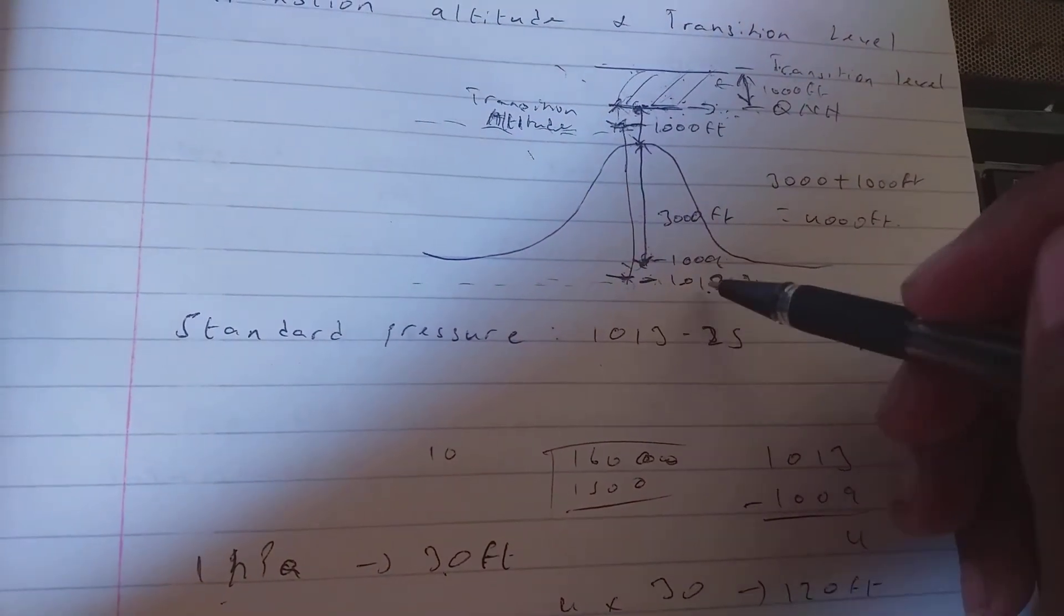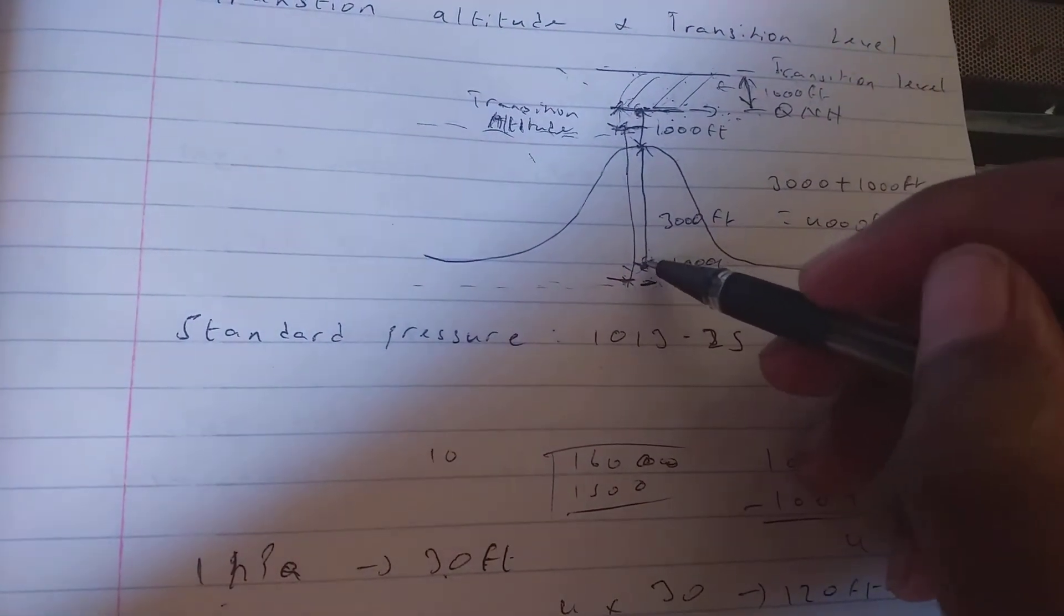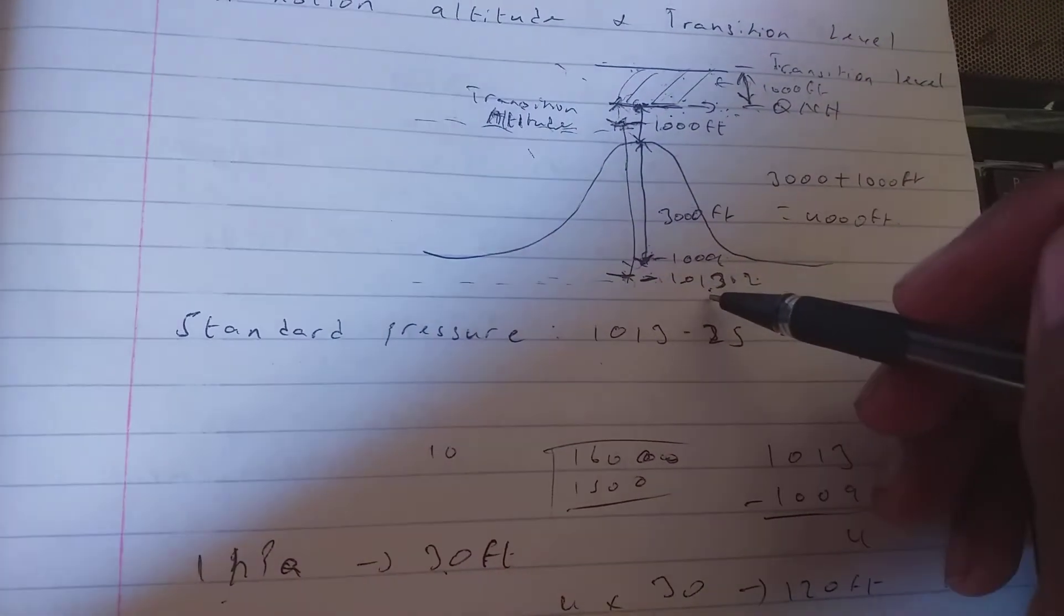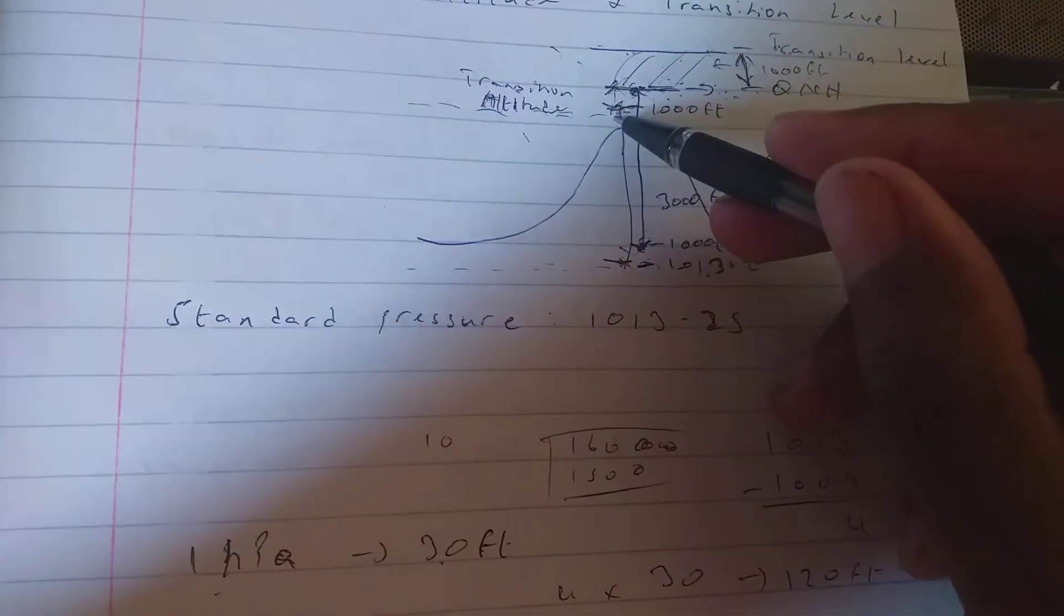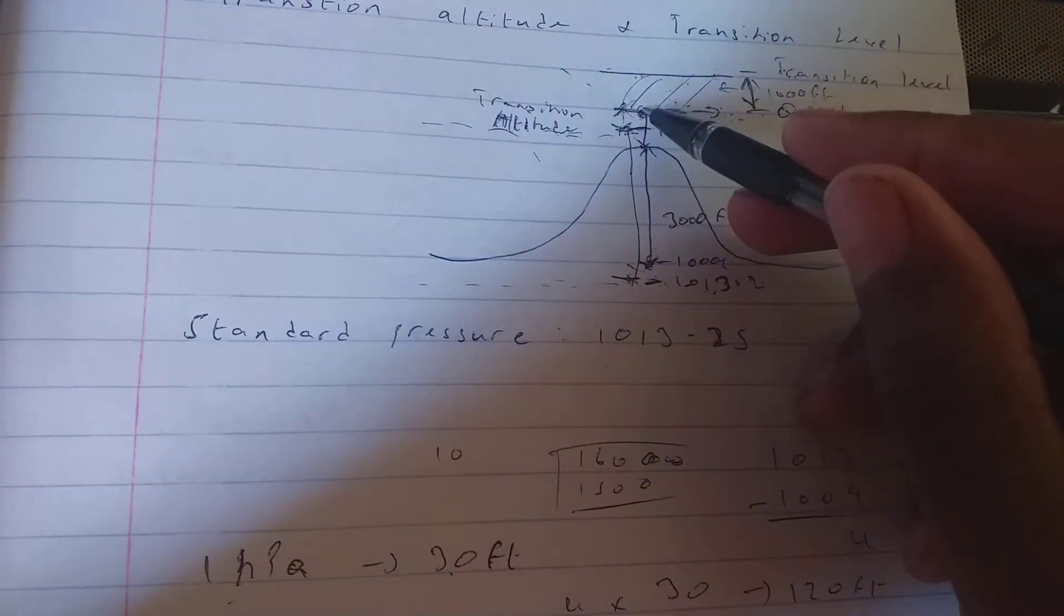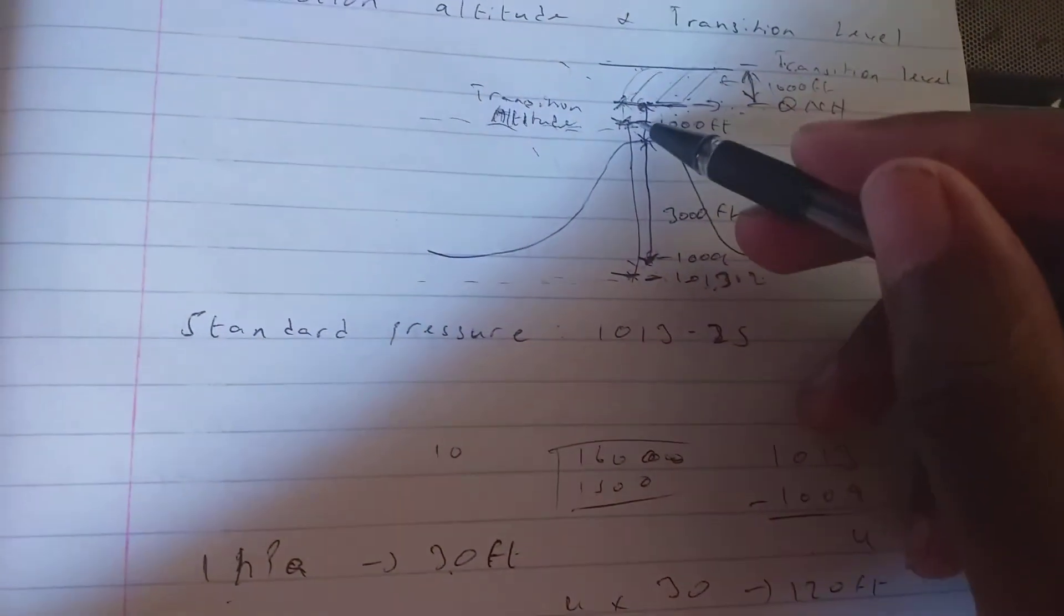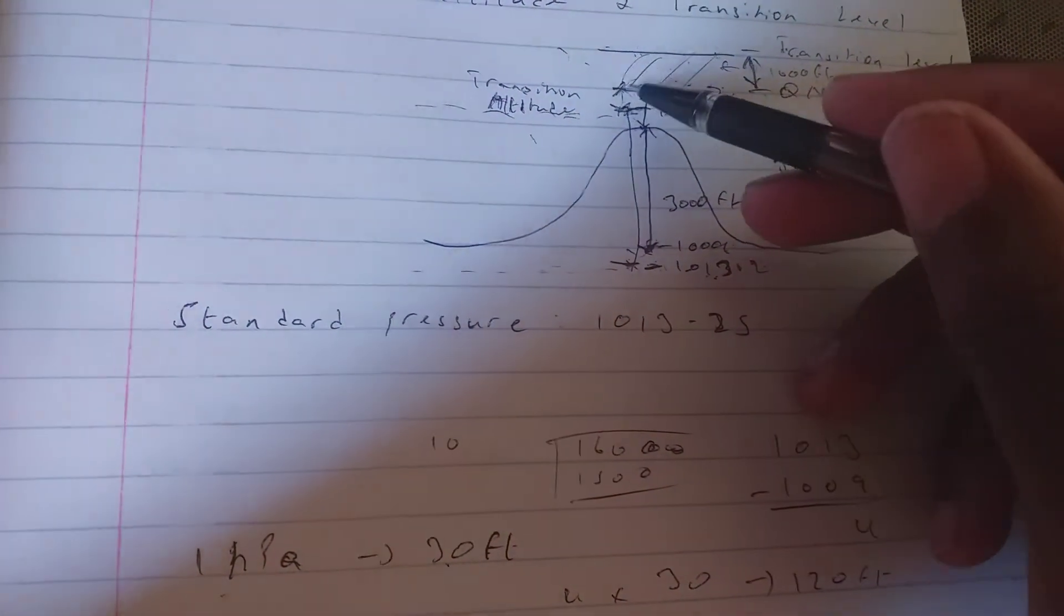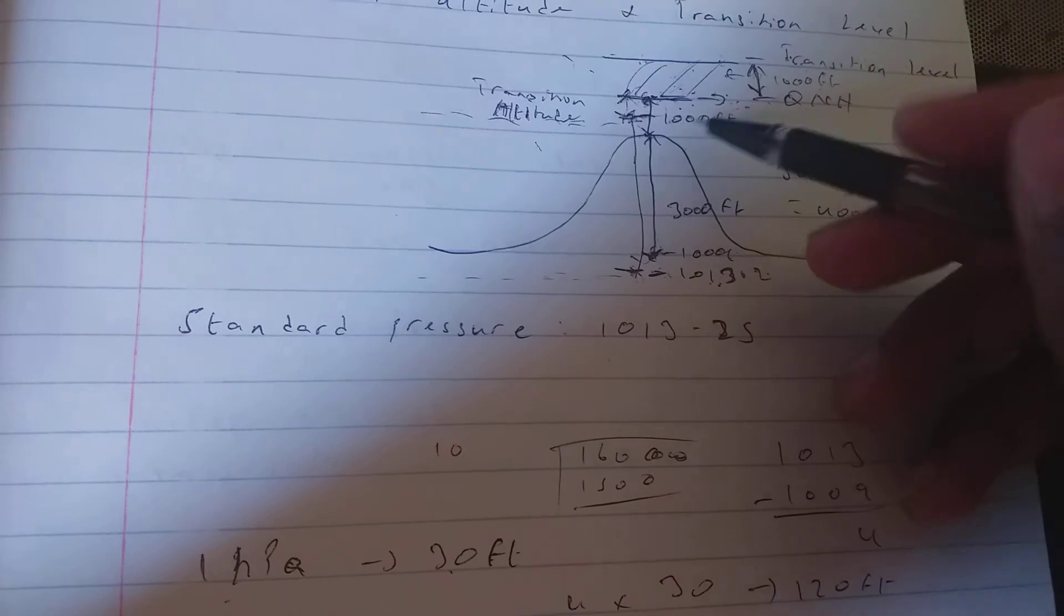So there's a risk that it can hit something. We must find this distance. How we do that, we just take the standard pressure and subtract the local QNH.